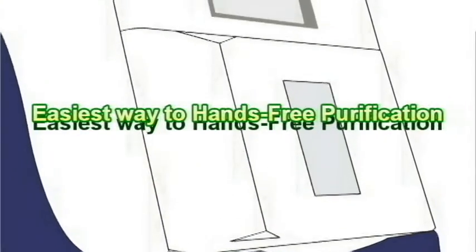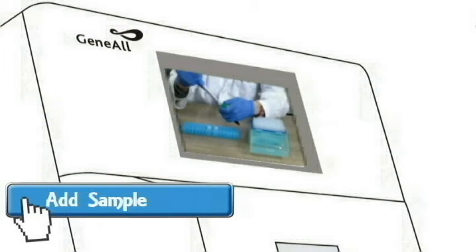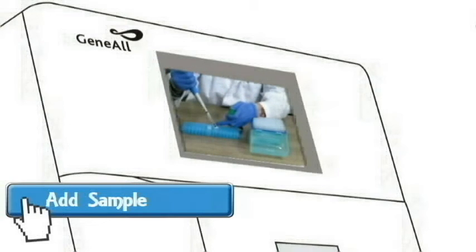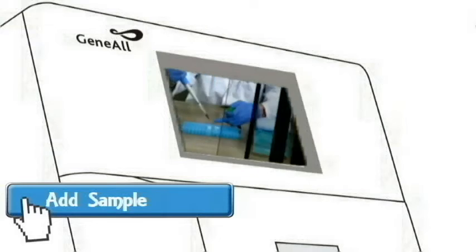Steady offers the easiest way to hands-free purification. First, add samples onto the rack. For blood samples and buffy coats, simply follow the pretreatment guideline.